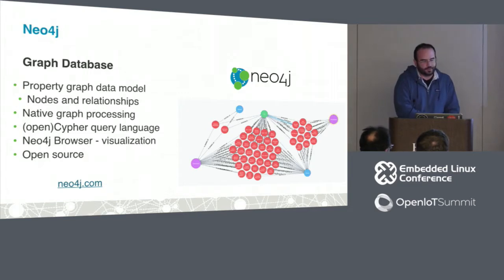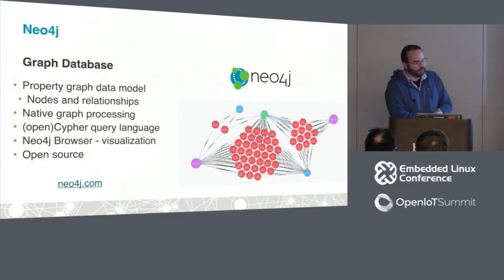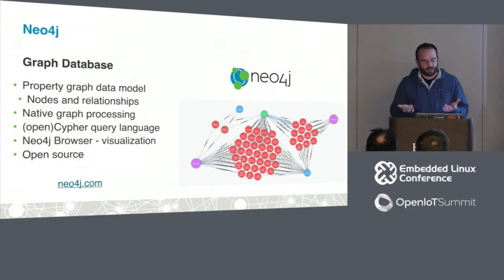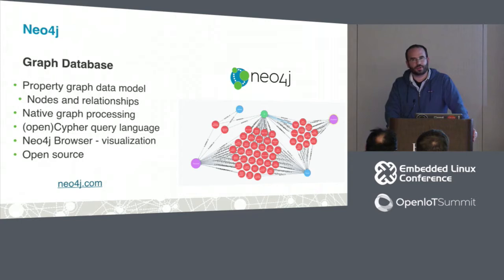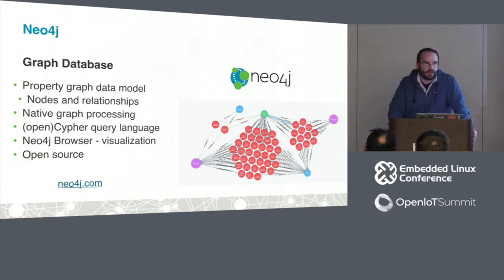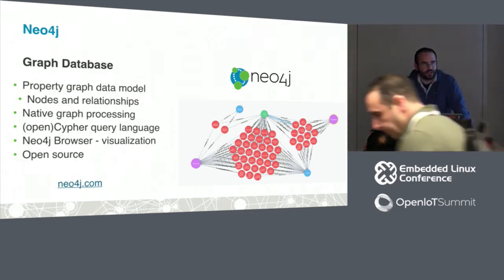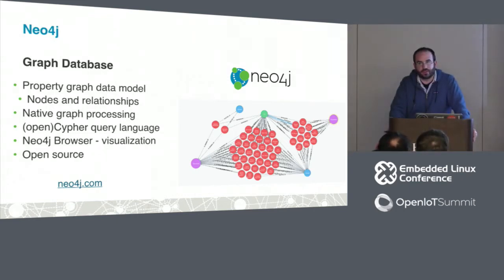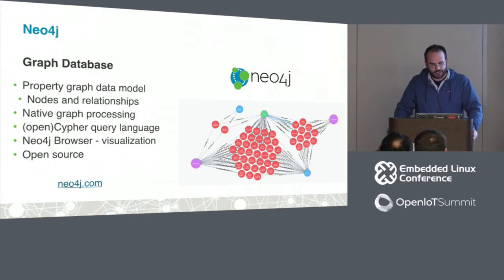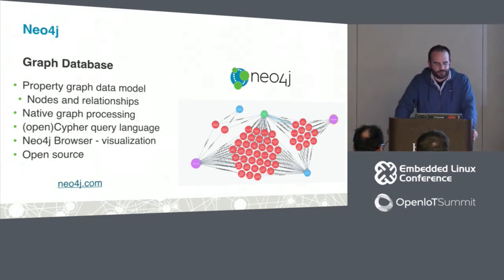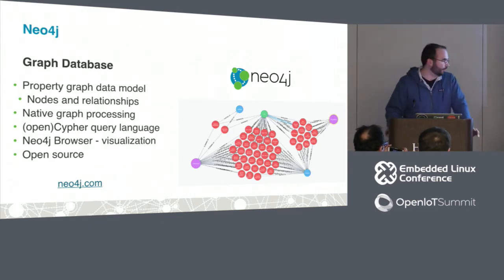That's a whirlwind introduction to graph databases and Neo4j. We covered the data model — nodes and relationships. There's also an important property of graph databases: native graph processing, which means we can traverse the graph very efficiently and work with very large datasets at scale. We have OpenCypher as the query language, the Neo4j browser as a query workbench, and Neo4j is open source, so you can download it and get started with no problem.